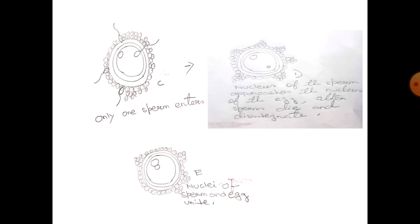When the nuclei unite, they form a zygote, which is the basic unit of life. This zygote moves from the fallopian tube to the uterus, where further development takes place.